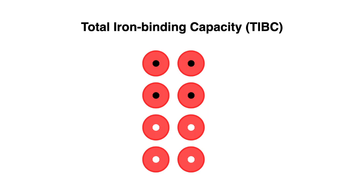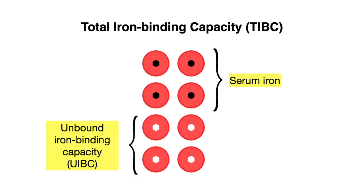The four transferrin molecules bound to iron represent our serum iron, and the remaining transferrin that is not bound to iron is known as the unbound iron binding capacity, or UIBC.